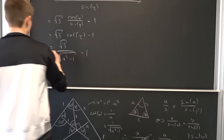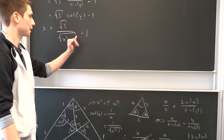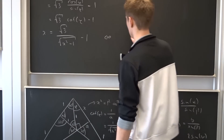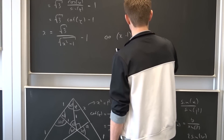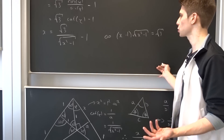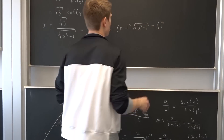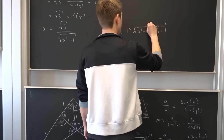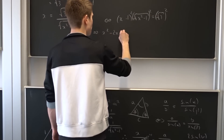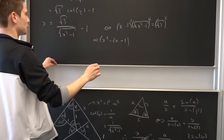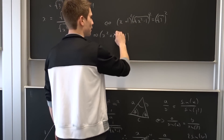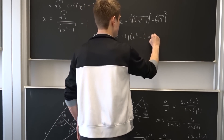Now we solve for x algebraically. Adding 1 to both sides and multiplying both sides by √(x² − 1): (x + 1)·√(x² − 1) = √3. The roots are annoying, so we square both sides: (x + 1)²·(x² − 1) = 3.